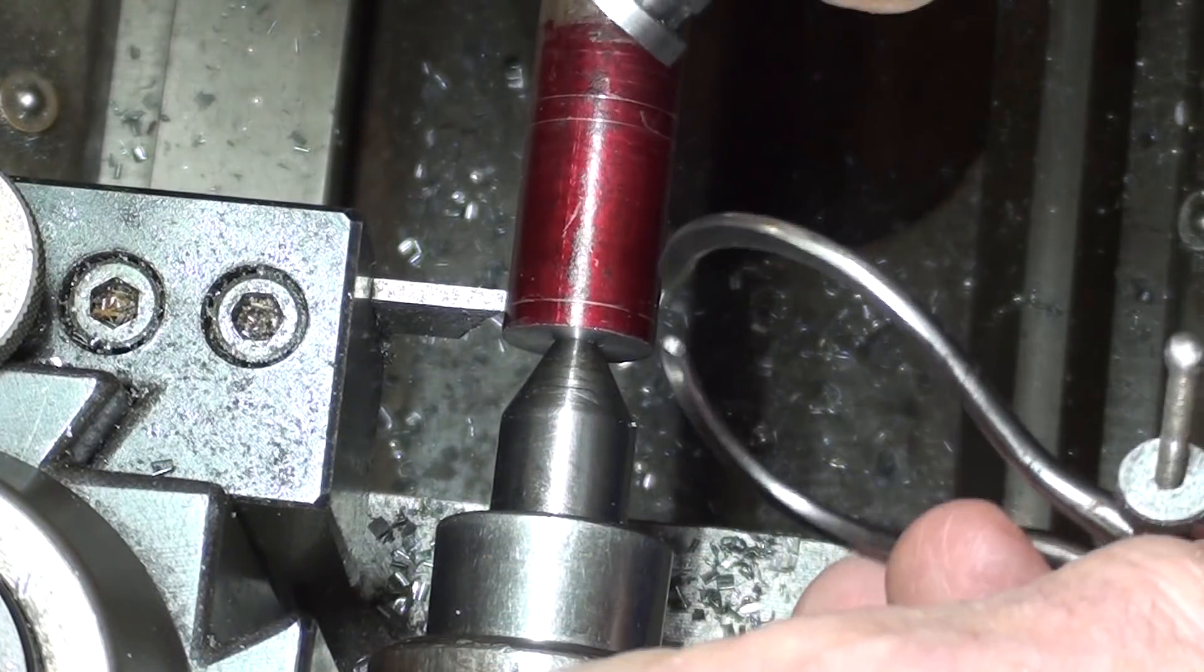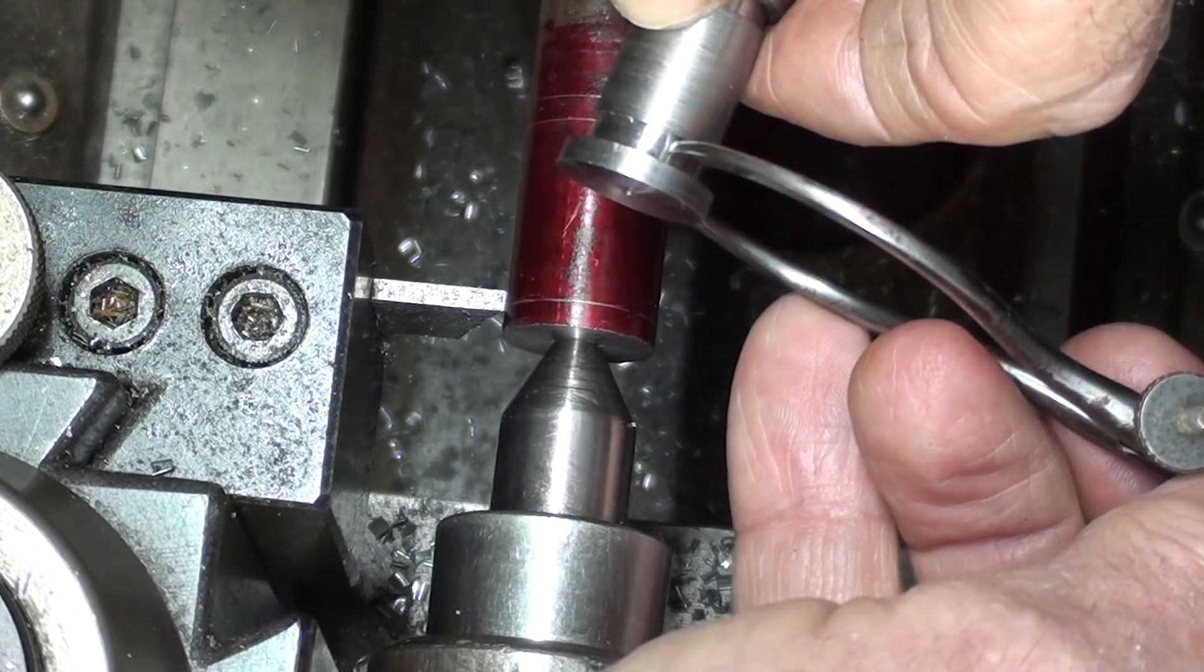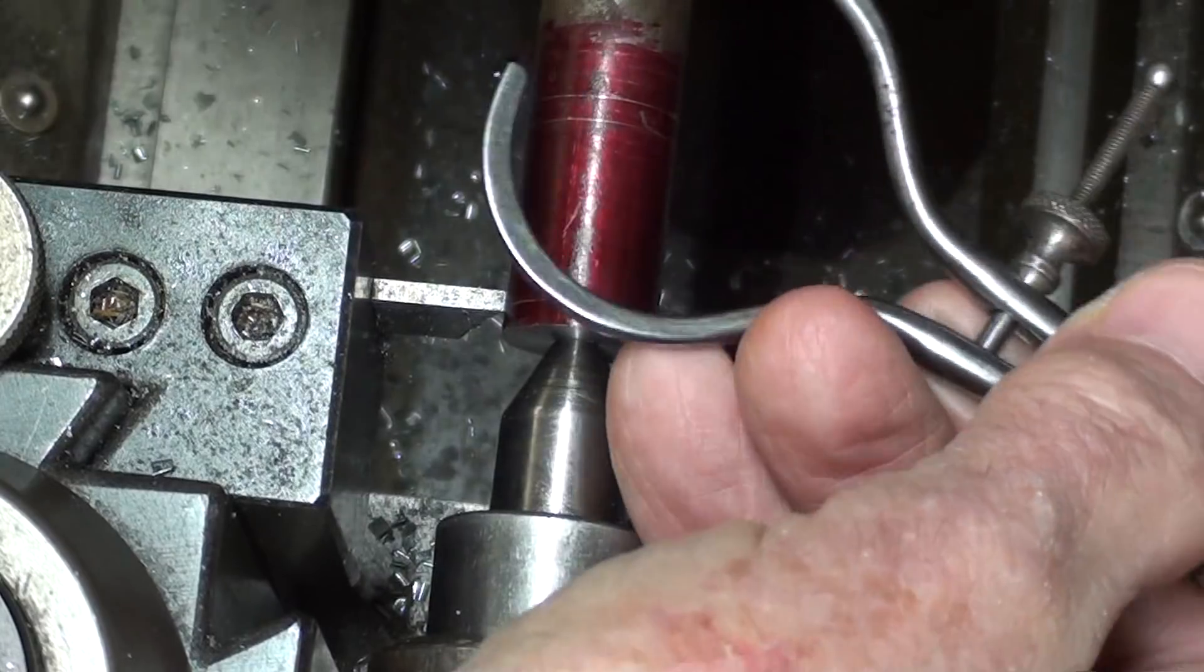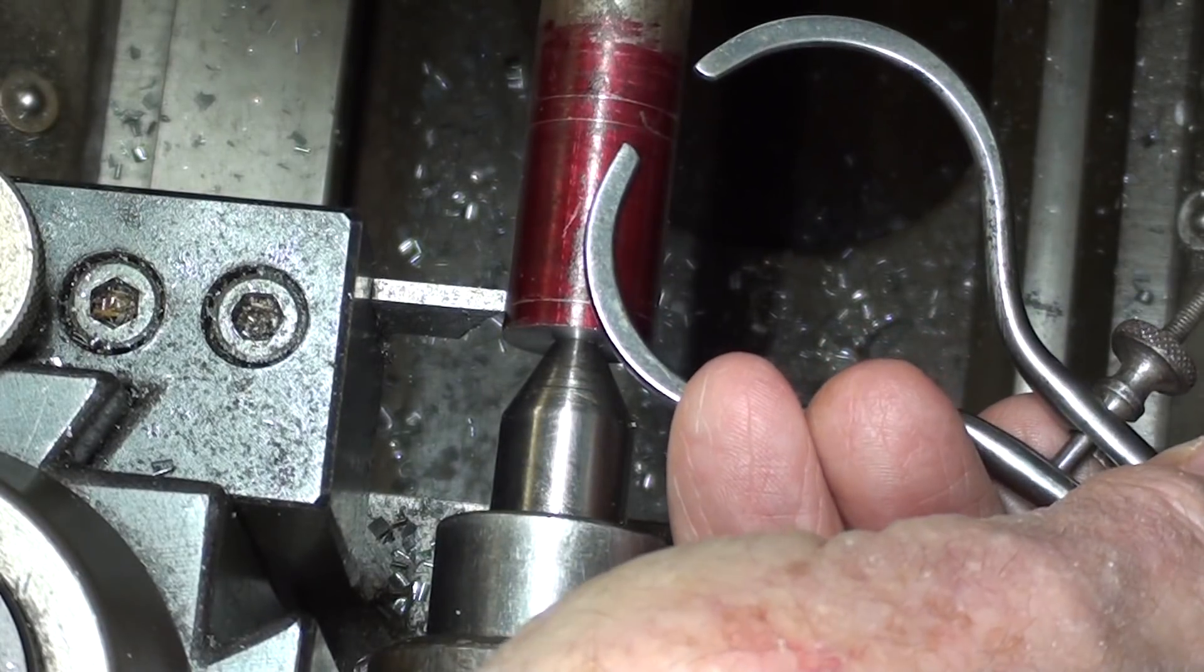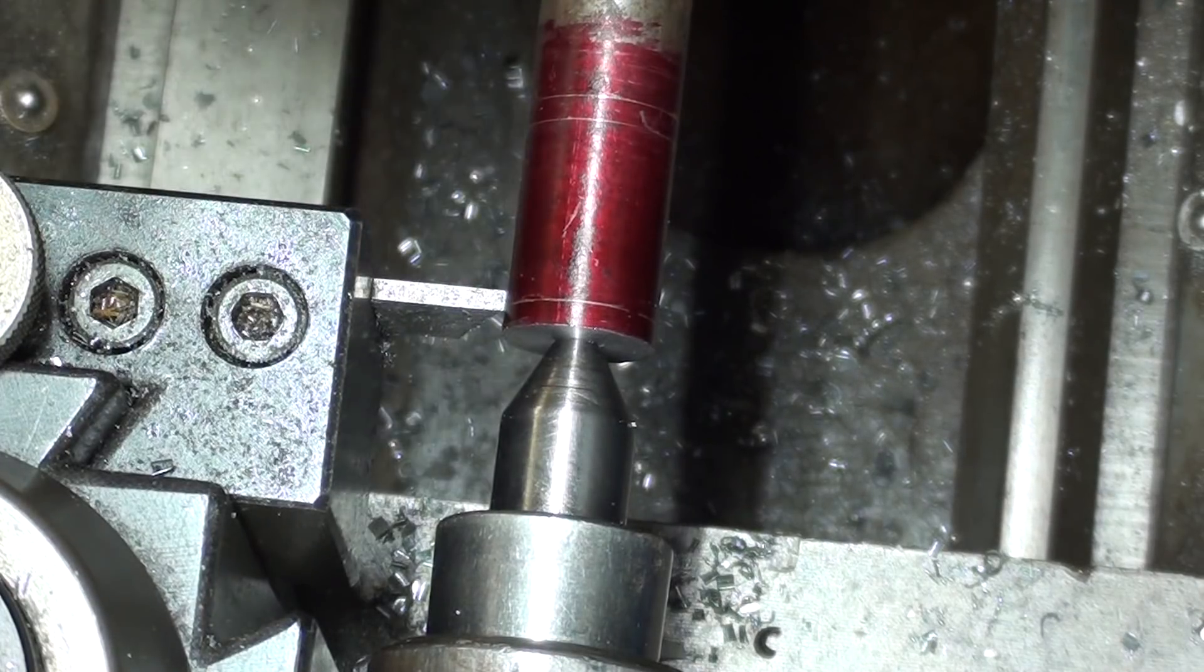First, I'll make the undercuts. And for some reason, that dimension is not on the drawing, but I'm going to make them .716. And I'm just using a little caliper for that purpose. A .332 cutoff tool. You could use an .8 inch.